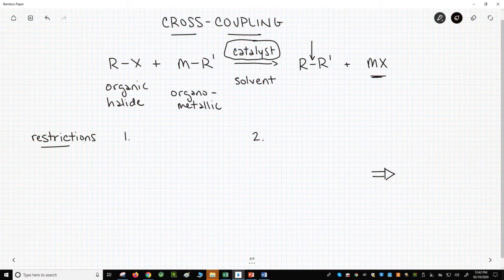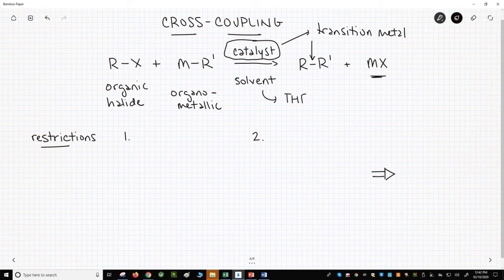The catalyst is typically some kind of transition metal, and the solvent really varies – THF, DMF, toluene. These are all common examples.